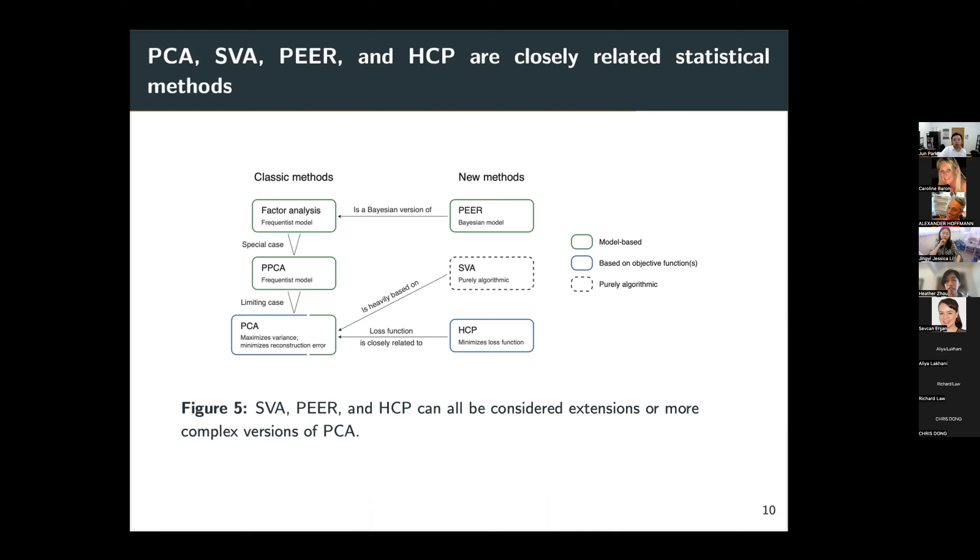Factor analysis is a popular factor discovery method often used in the social sciences, and it's based on a frequentist statistical model. So these three methods can all be considered classic methods in the statistical literature. And on the other hand, the new methods PEER, SVA, and HCP can all trace their methodologies back to PCA.